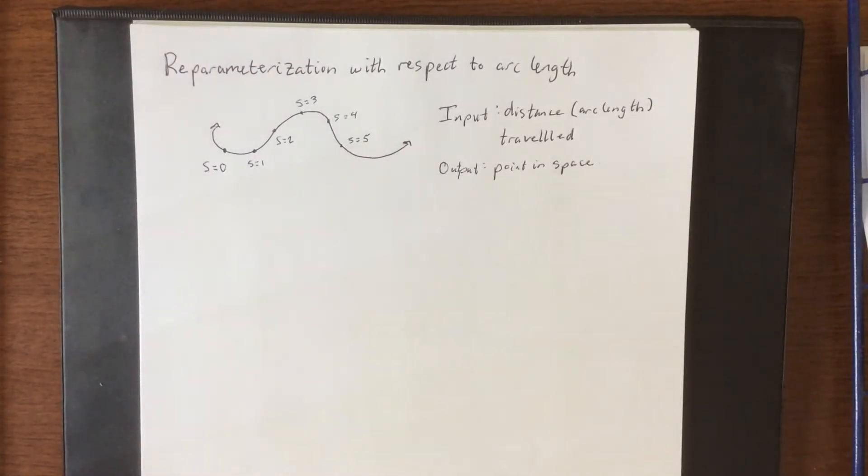We refer to this as a vector function that has been reparameterized with respect to arc length, and we're going to talk about why we want to do that after this video.